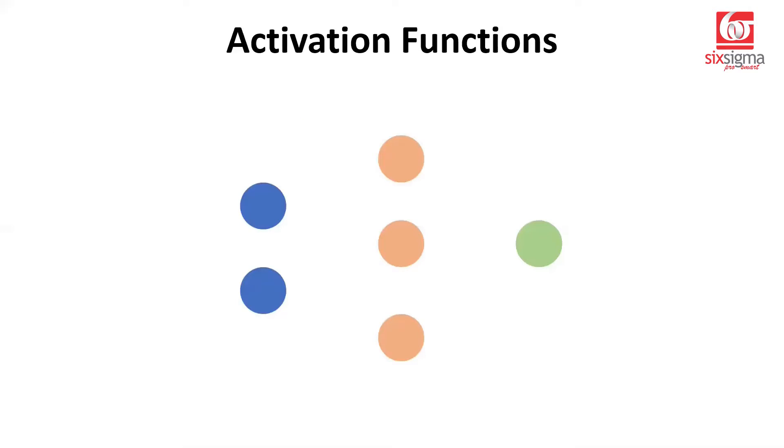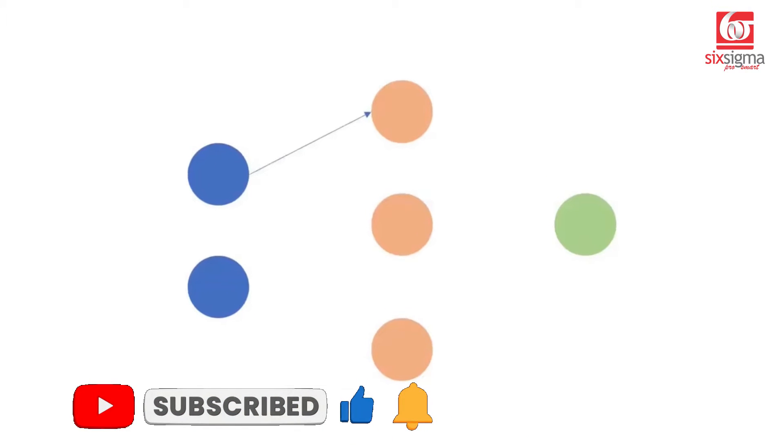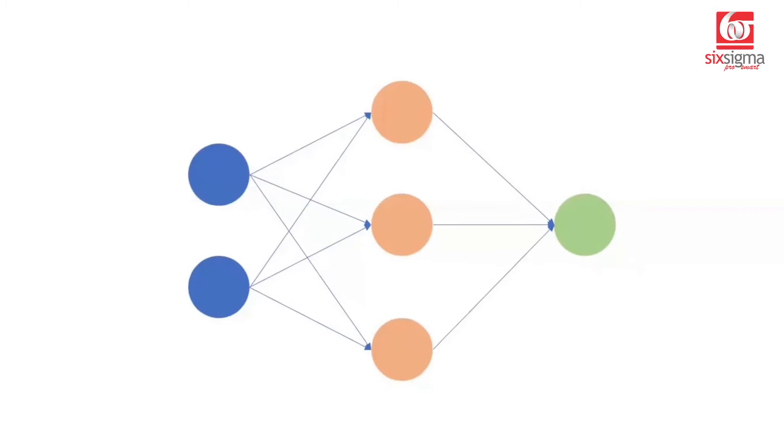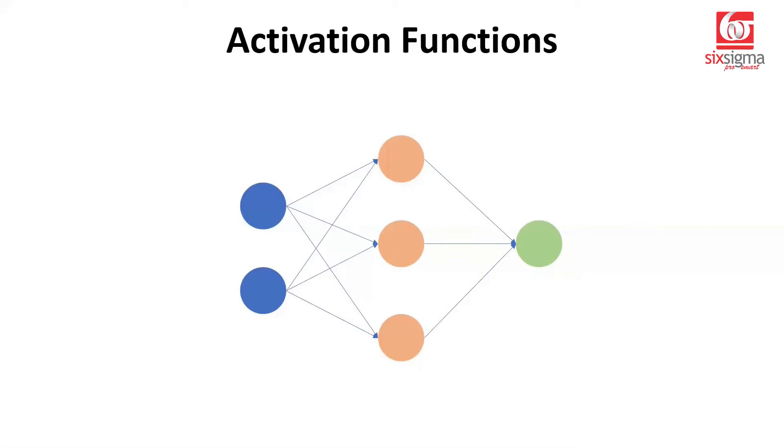Let's take an example. Let's say we have a very simple neural network where we have two inputs, three neurons in the hidden layer, and one output. This is a fully connected neural network, so every neuron is connected to the neurons in the subsequent layers. For example, neuron one is connected to the first, second, and third neurons in the hidden layer. Likewise, the second input neuron is connected to all three hidden layer neurons. And these hidden neurons are likewise connected to the output neuron. This is our neural network.